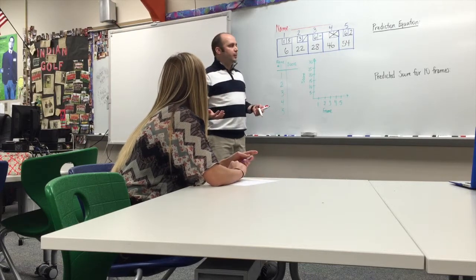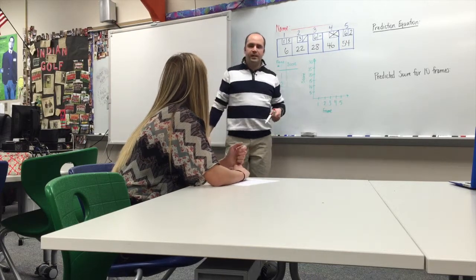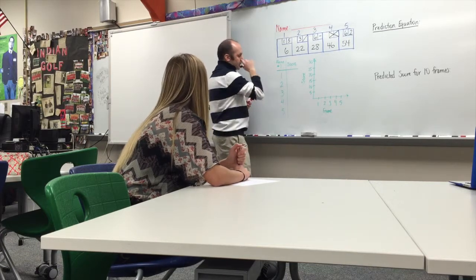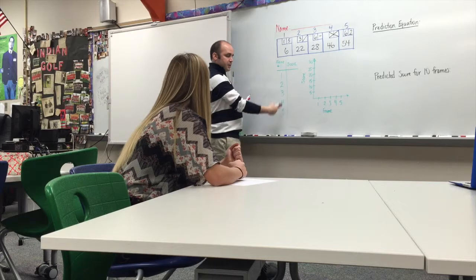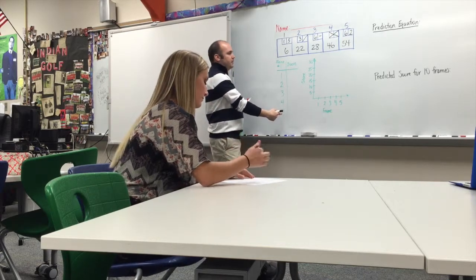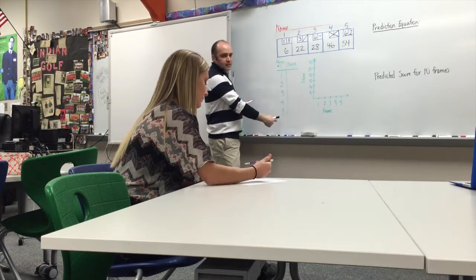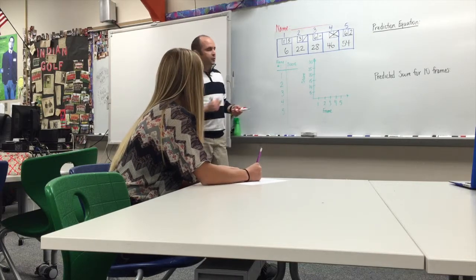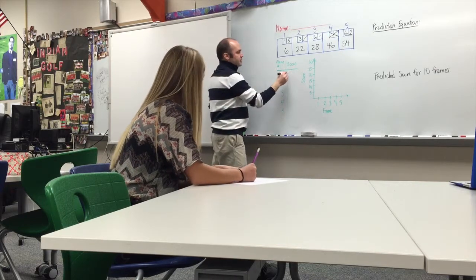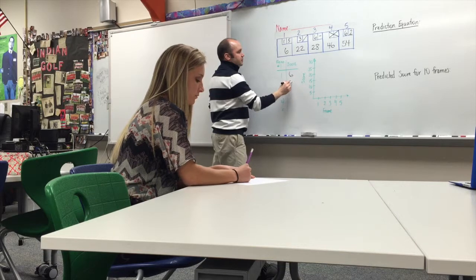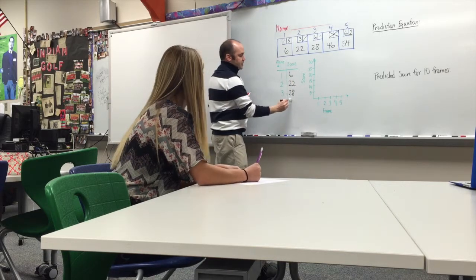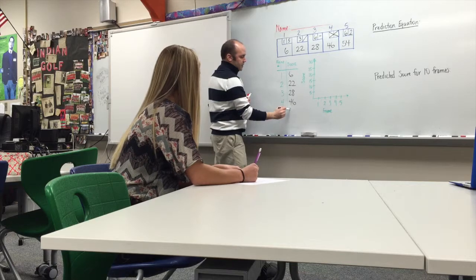Some people want to say, well, my prediction is I'm just going to double that and say after 10 frames you're going to have 108. We'll find out. So what we're going to do is make your table. For your X column you have your frame number, and then your Y column you're going to have your score. So you have six, 22, 28, 46, and then 54.